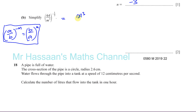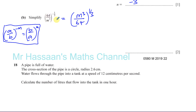So we have M cubed over 64, and this will now be to the power of a third. The M cubed doesn't become negative because it's moving to the numerator because of the negative sign outside the bracket — the power of the whole bracket is negative, that's why that's becoming the numerator. These two just basically swap places without any other change, but this power outside changes to a positive power.